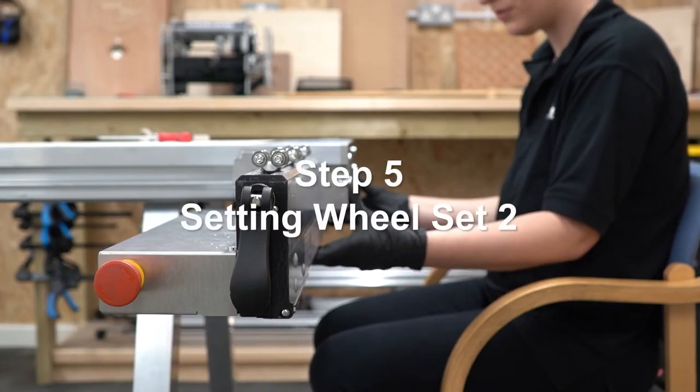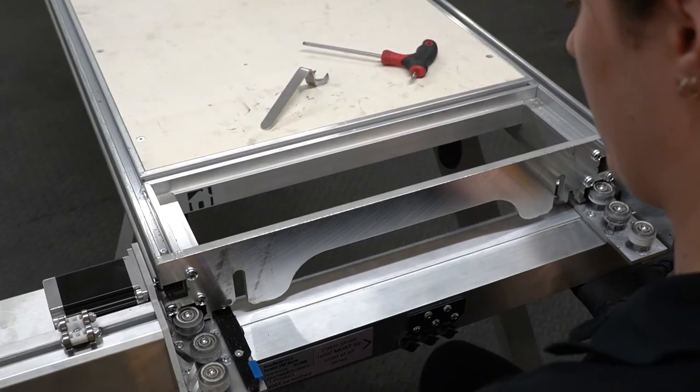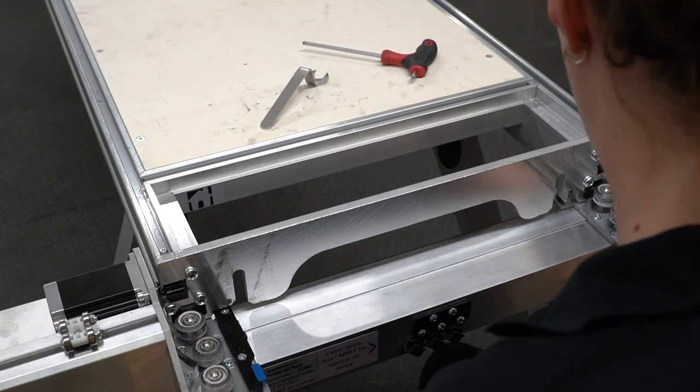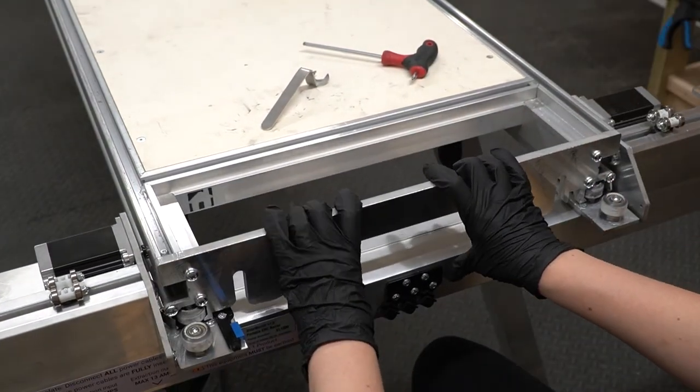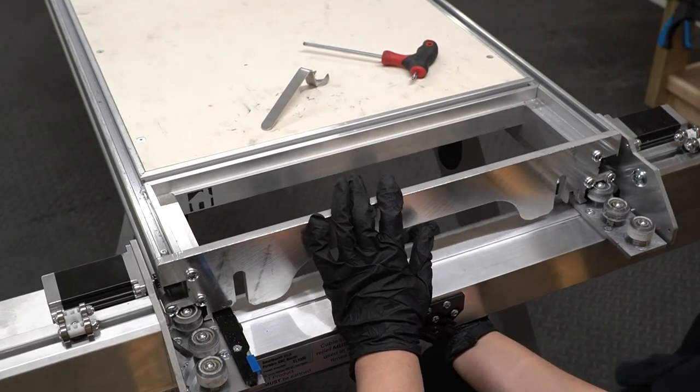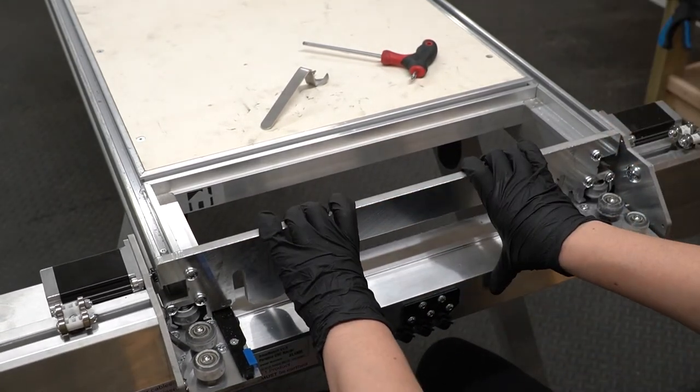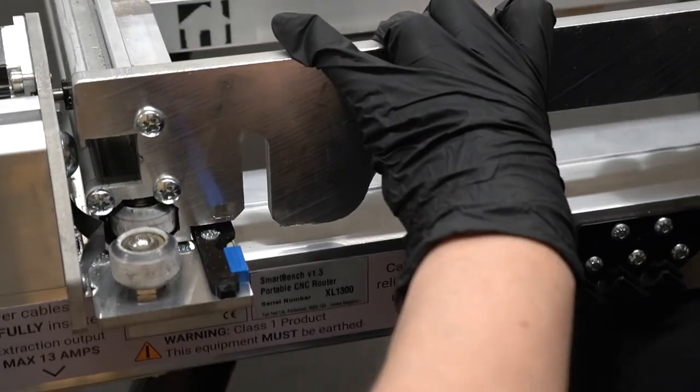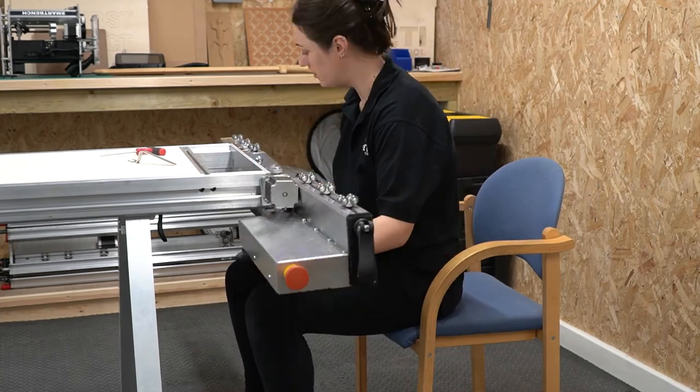Now we can move on to wheel set two. Offer wheel set two up to the Y bench channels. In this case our wheels are too tight and will not easily engage with the channels. A good way to tell if your wheels are too tight is if you are unable to push the X beam forward using just your thumbs. Decrease the pre-load by making clockwise adjustments to both wheels until you are happy with their engagement.